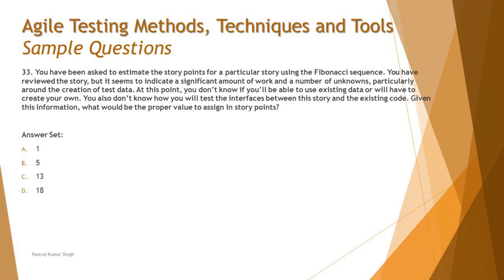This is a scenario-based question. You have been asked to estimate the story points for a particular story using the Fibonacci sequence. You reviewed the story but it seems to indicate a significant amount of work and a number of unknowns, particularly around the creation of test data. This means we estimate it as a lot of work, and there are unknowns about how long it will take.